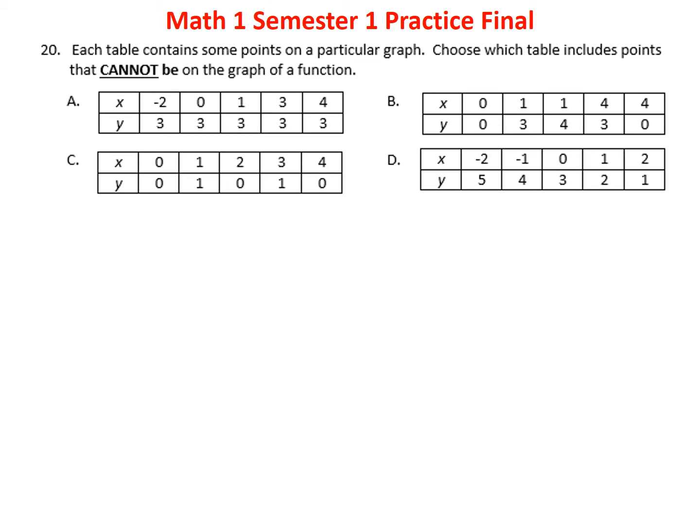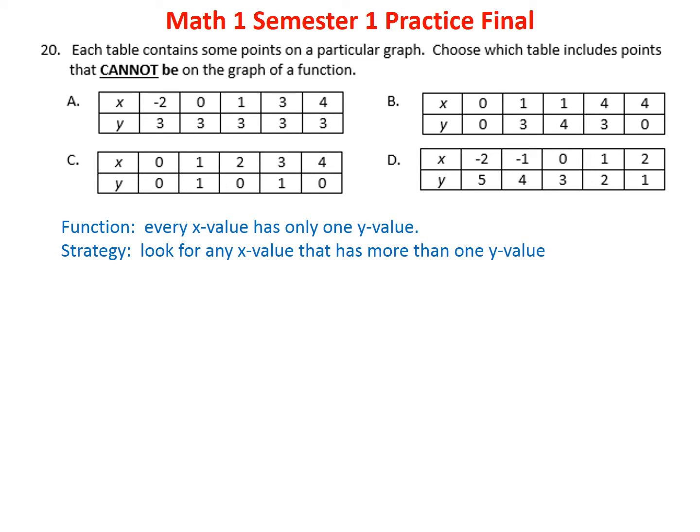Problem twenty: a relation is a function only if each x value appears just once with a unique y value. Looking at option B, the x value of 1 appears with both y equals 3 and y equals 4 — a duplication. That means this cannot be a function. Options A, C, and D all have unique x values. The answer is B.